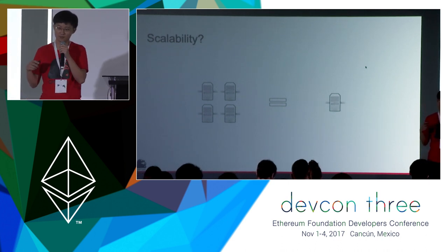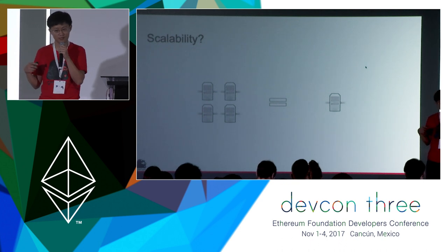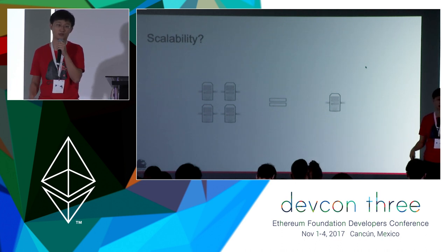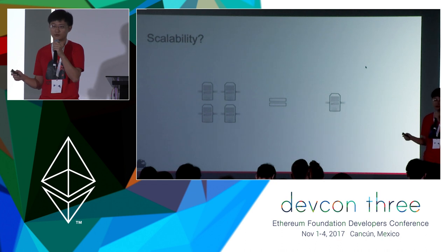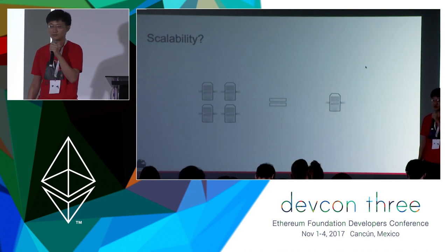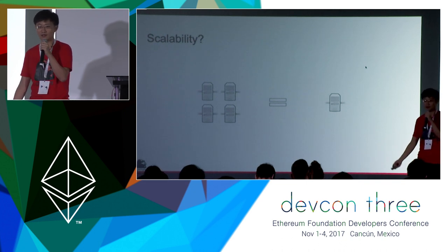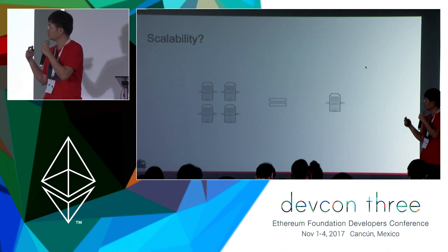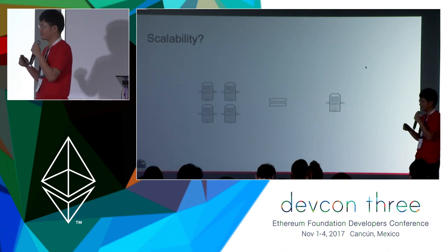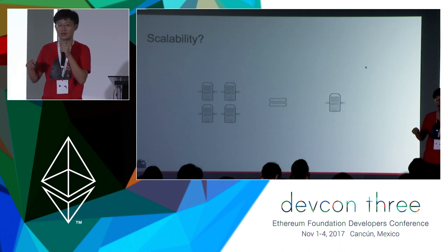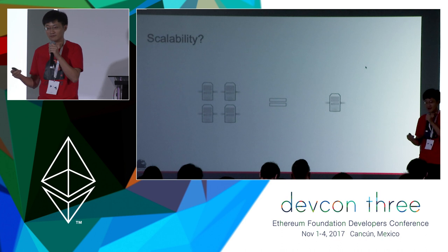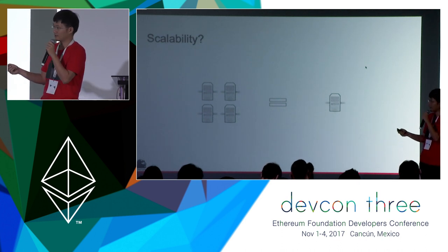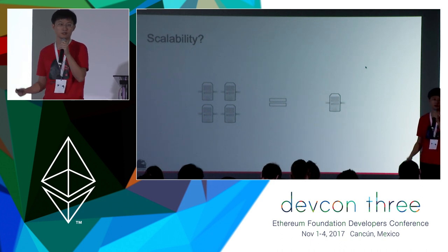In blockchain, we need to replicate transactions as many times as there are nodes in the network, broadcast those replicas to all nodes, and all nodes need to process the same transactions again and again and then vote. So no matter how many nodes are in the network, the throughput of the whole network is the same as a single node. You cannot increase the network's throughput by simply adding nodes.